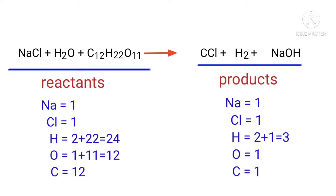To balance the chemical equation we need to make use of coefficients. A coefficient is a number that we place in front of a chemical formula.